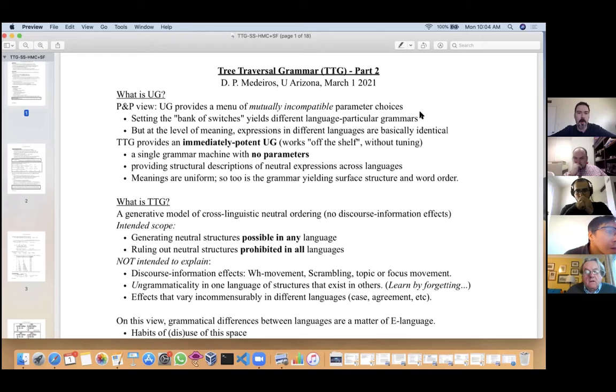Tree traversal grammar has a very different view of universal grammar as immediately potent, working off the shelf without tuning and without parameter setting, to provide the structural description of neutral expressions across languages. In this view, not only are meanings uniform, but so too is the grammar that determines the surface structure and possible word orders for each meaning.